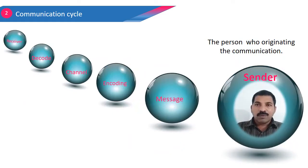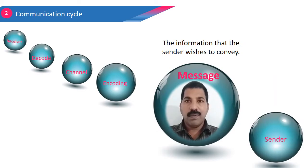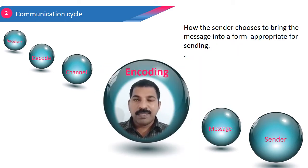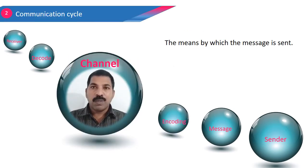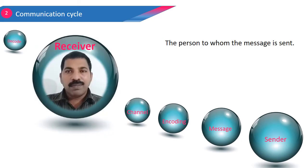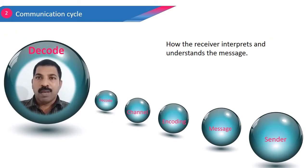The person originating the message is known as the sender. The message is the information that the sender wishes to convey. Encoding means the sender puts the message into a form appropriate for sending. The means by which the message is sent is the channel. The person to whom the message is sent is the receiver. How the receiver understands and interprets the message is known as decoding.